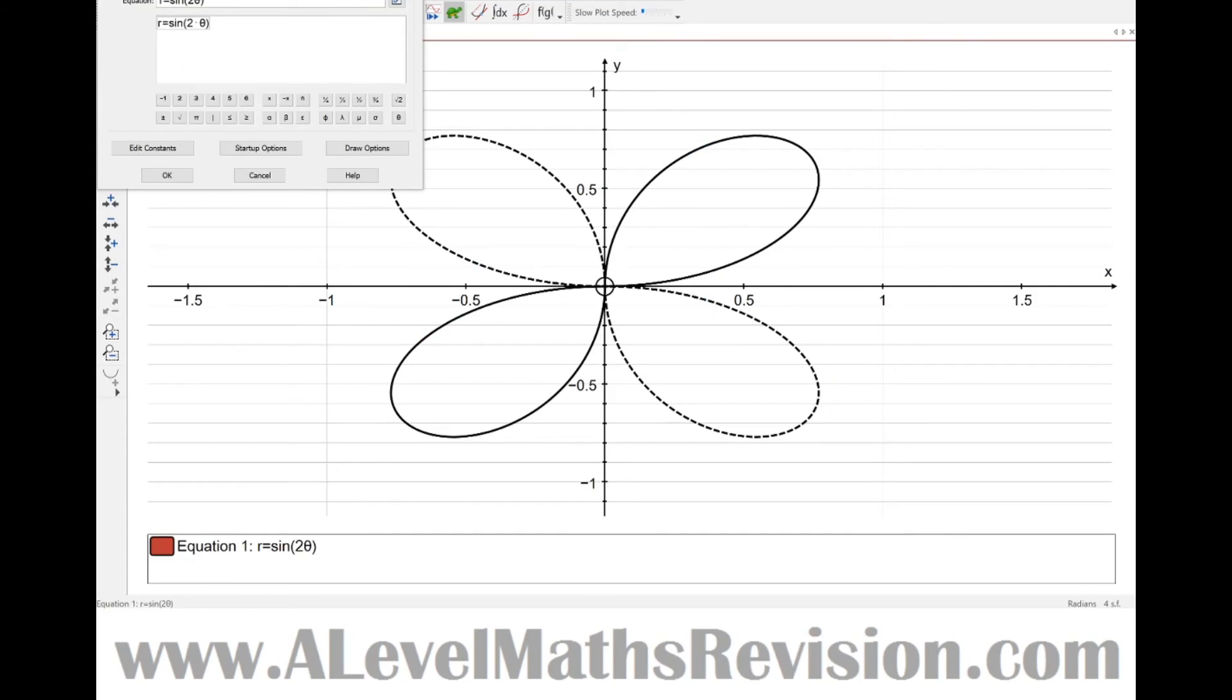So let's have a look at this in Autograph. You can see there that's the shape of the curve, and you can see there's some dotted lines. Those dotted lines are where the distance r will be negative. We spoke about this just before—it's debatable whether r is allowed to be negative. For the purposes of A-level we'll say it can't, so ignore those dotted lines.